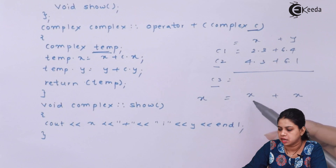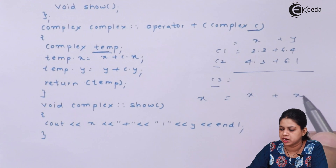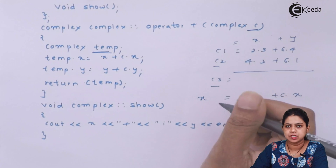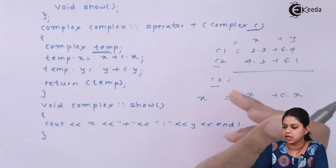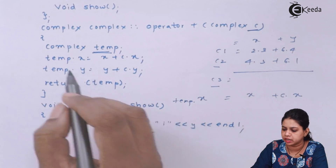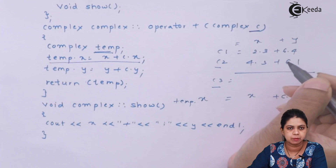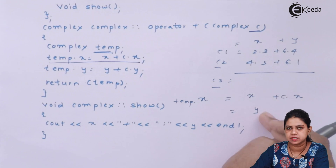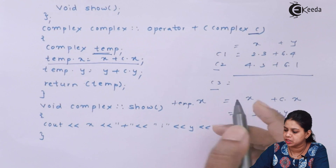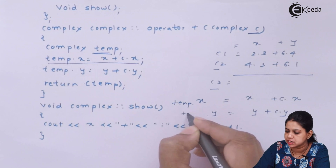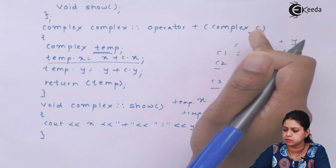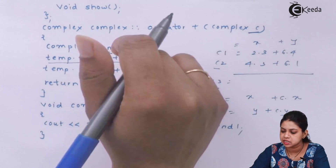For c2 I have created object 'c', and for c3 I have created object 'temp'. While accessing c2's x part I write c.x, and for c3's x part I write temp.x. So: temp.x = x + c.x. For the y part I do the same: c1's y I use as it is, c2's y I access as c.y, and c3's y is temp.y. So: temp.y = y + c.y.